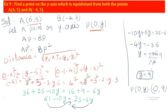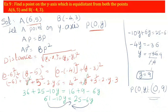This is the required point. To summarize: let the point be (0, y) on the y-axis. From the data, P is equidistant from A and B, so PA = PB, meaning AP² = BP². Substitute the values and simplify to get y = 9. The required point is (0, 9). Thank you, students.